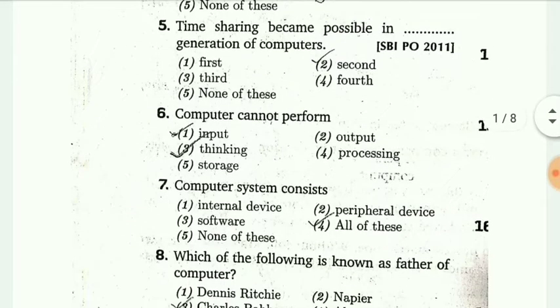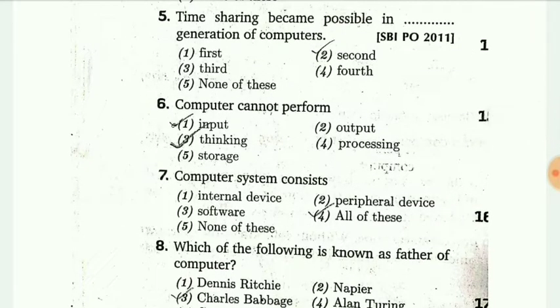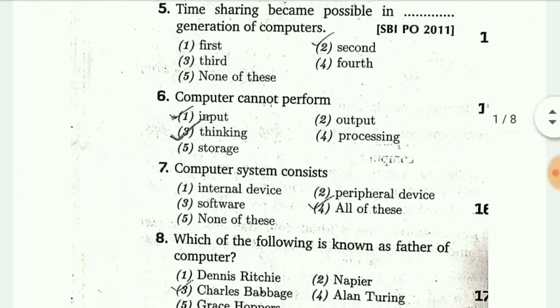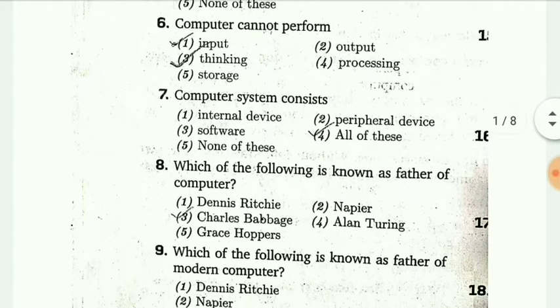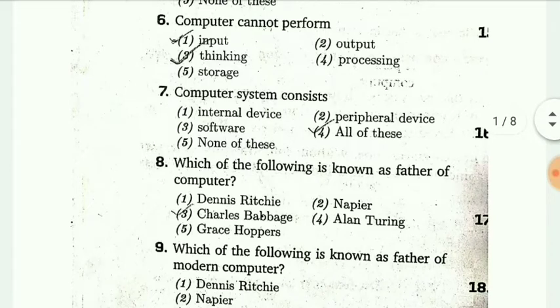Time sharing becomes possible in dash generation computers. The answer is second generation computers. Next, the computer cannot perform dash. The answer is thinking.